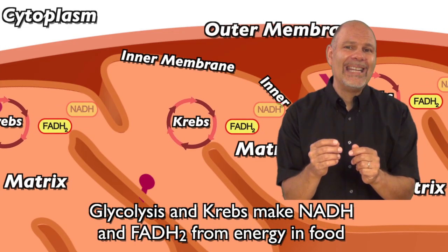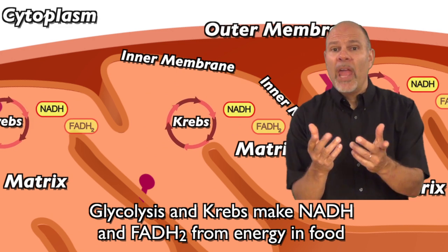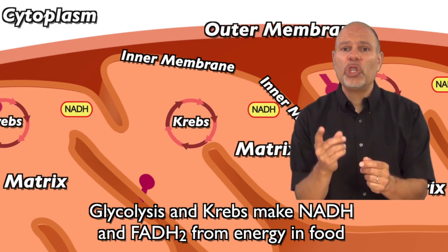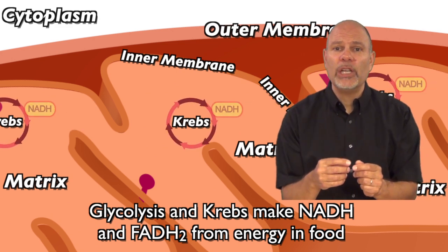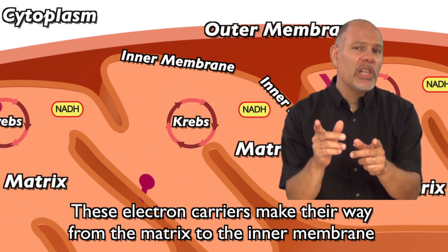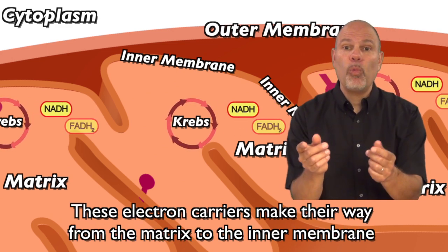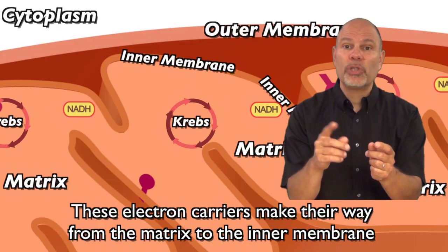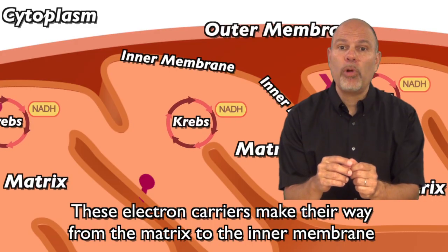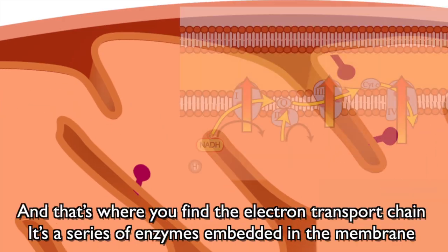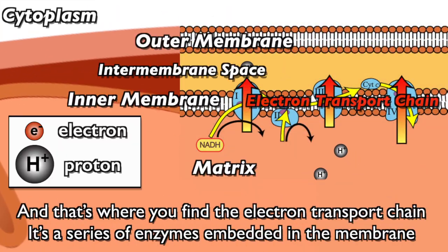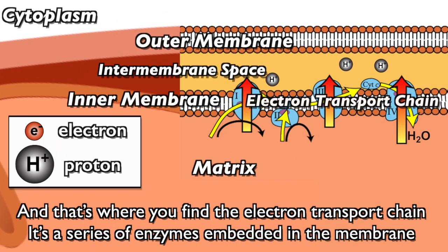Glycolysis and the Krebs cycle make NADH and FADH2 from energy and food. These electron carriers make their way from the matrix to the inner membrane, and that's where you find the electron transport chain.